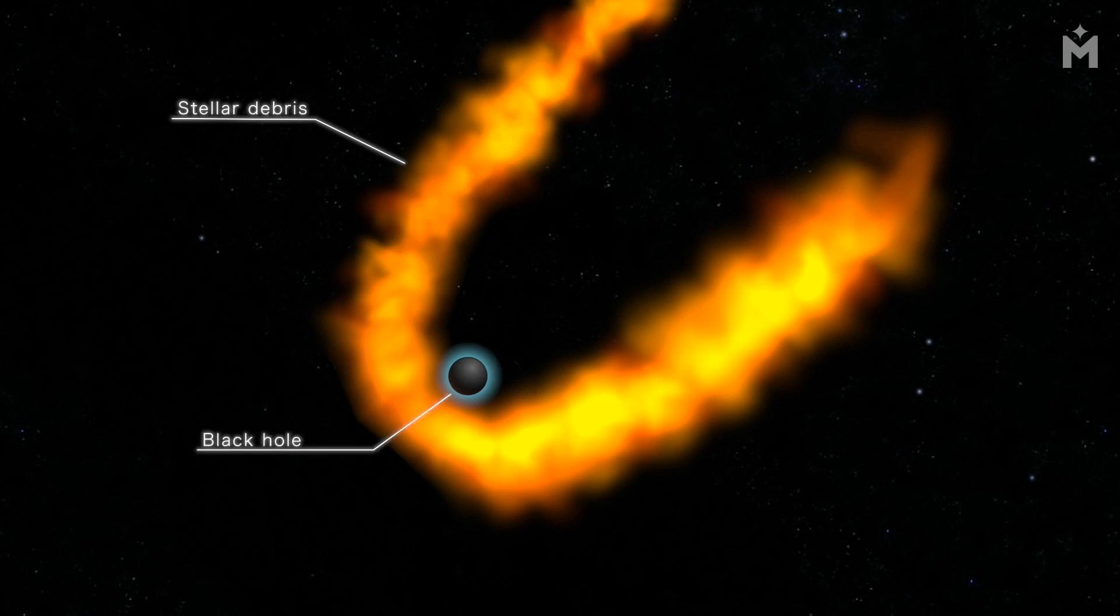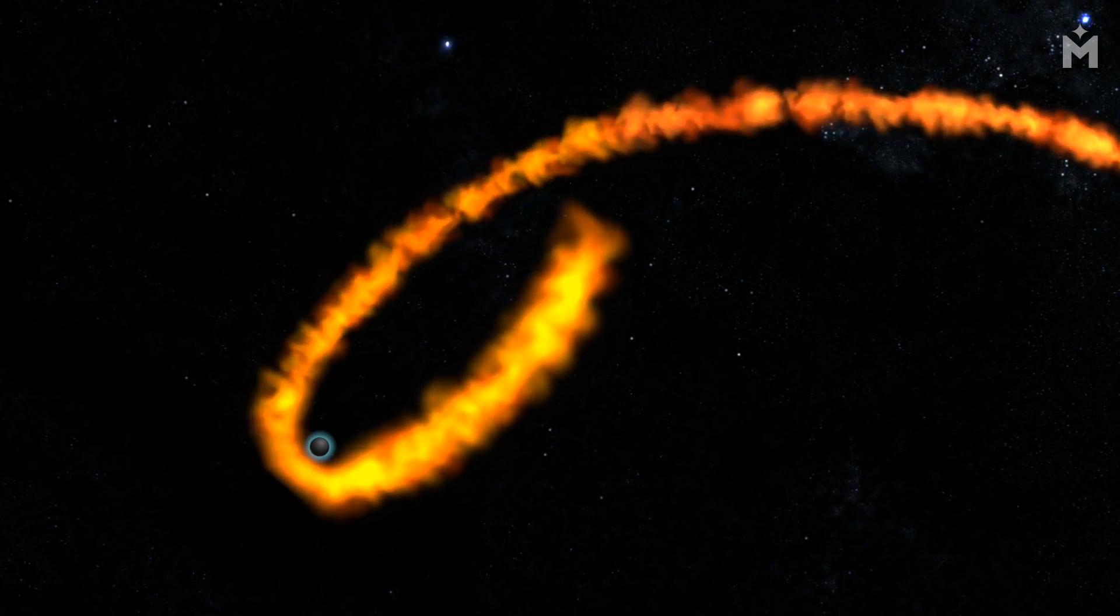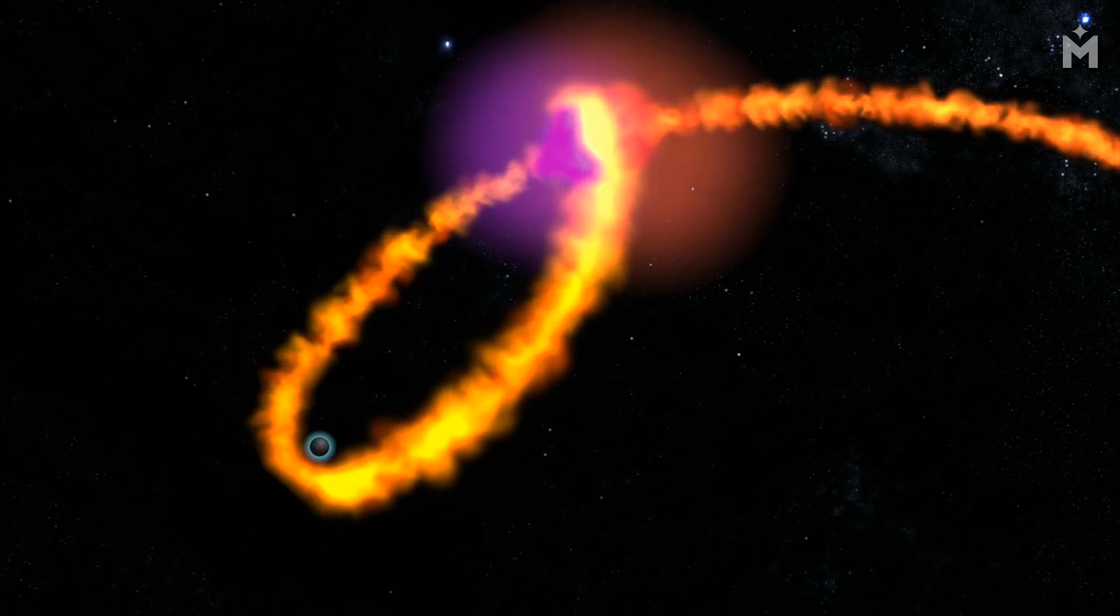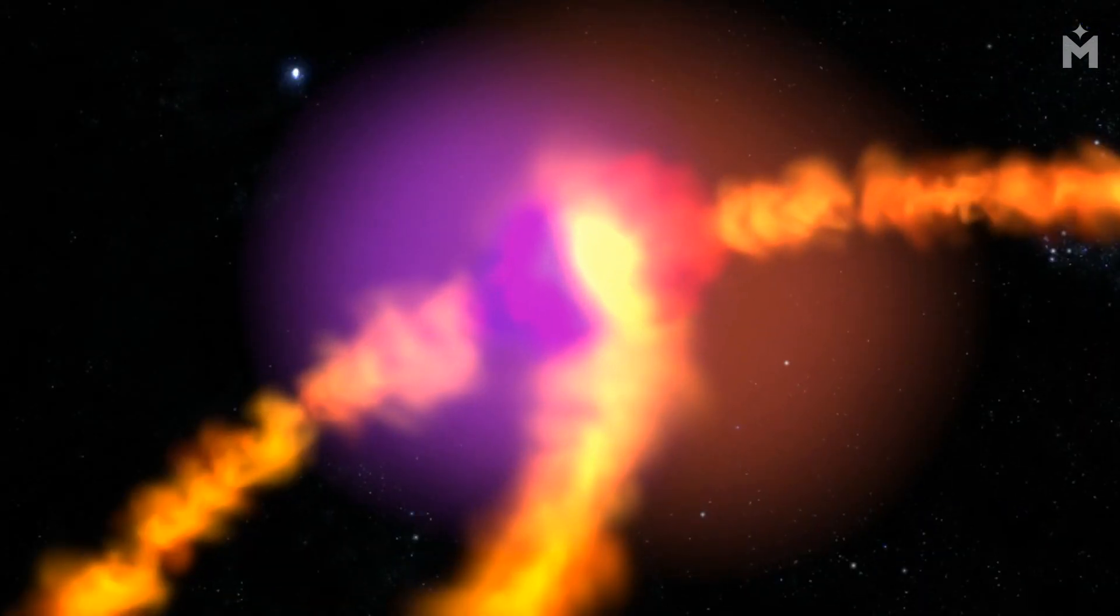For example, if the star is part of a binary system, then the other star will be pulled towards the black hole and the two stars will collide. This can lead to the formation of a new black hole.